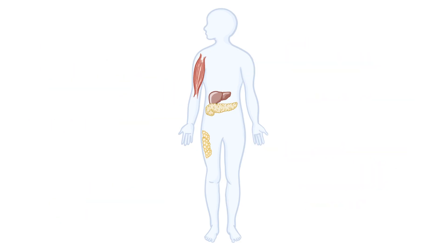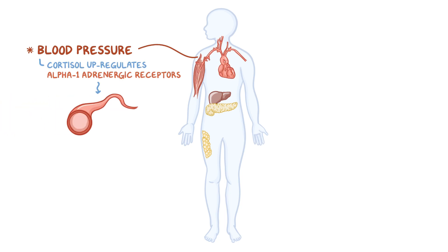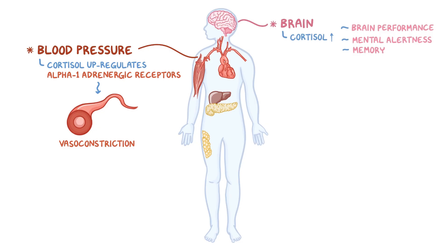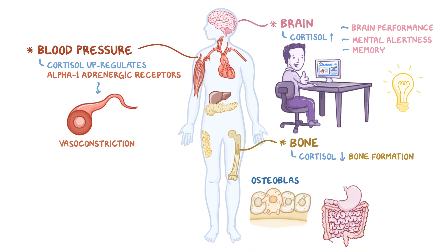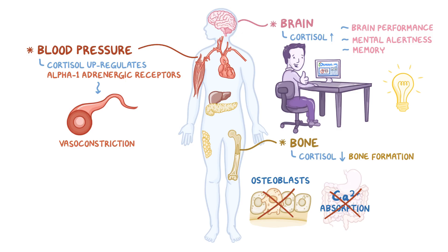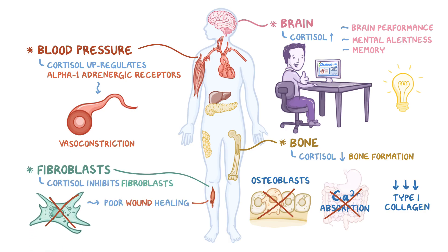Cortisol also plays a role in maintaining blood pressure levels, since it upregulates alpha-1 adrenergic receptors in blood vessels, which causes vasoconstriction. Cortisol increases brain performance, mental alertness, and stimulates memory of emotional events, while it inhibits retrieval of already stored long-term memory. Cortisol also decreases bone formation by inhibiting new bone formation by osteoblasts, suppressing calcium absorption in the bowel, and decreasing the production of type 1 collagen, which is fundamental for new bone matrix. Cortisol also inhibits fibroblasts, which leads to poor wound healing.